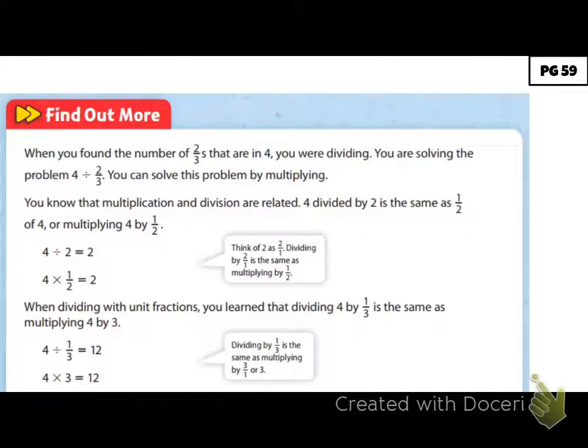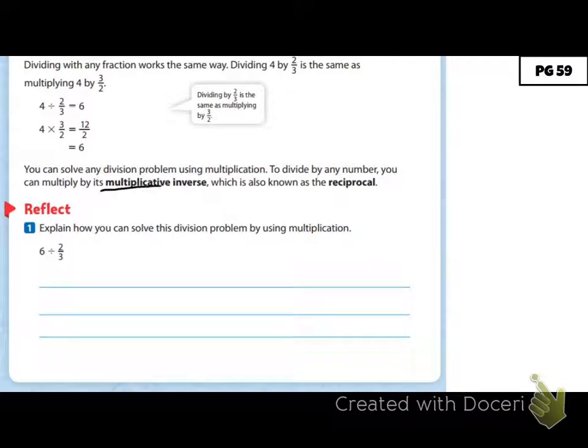So now I'm at the top of page 59. When you find the number of two-thirds that are in four, you are dividing. You are solving the problem four divided by two-thirds. You can solve this problem by multiplying. You know that multiplication and division are related. It's like you and your cousin, you're related. Four divided by two is the same as one-half of four or multiplying four by one-half. You guys already know how to do all this stuff, which is leave, change, flip. You're multiplying by the reciprocal of the fraction. It's a multiplicative inverse, which is also called the reciprocal. So leave, change, flip is technically leave, change, multiply by the reciprocal.